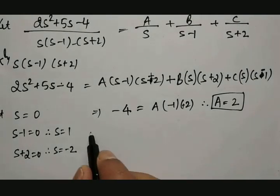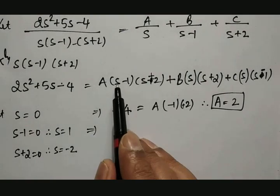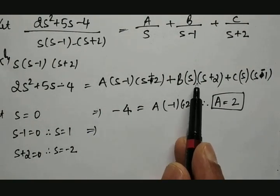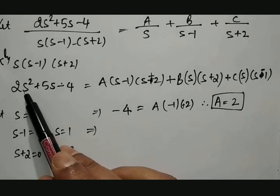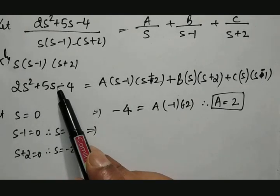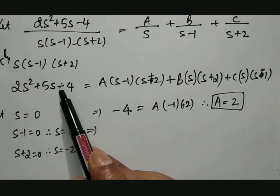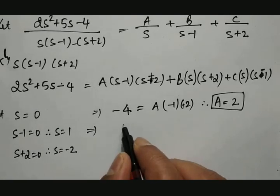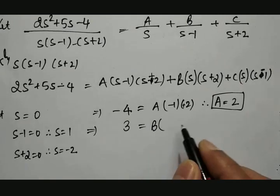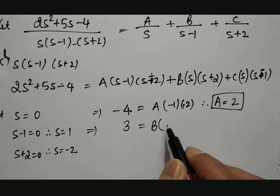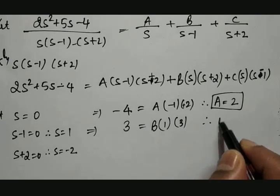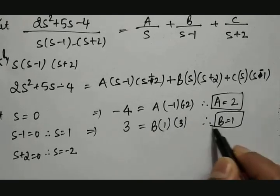Similarly, if we put s = 1, then only the middle term remains. Substituting: 2(1) + 5 - 4 = 2 + 5 - 4 = 3, which equals B(1)(1 + 2) = 3B. Therefore, B = 1.